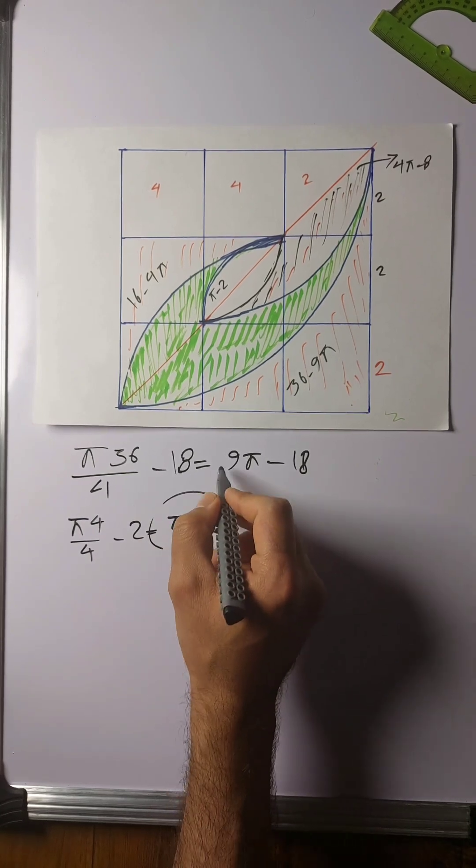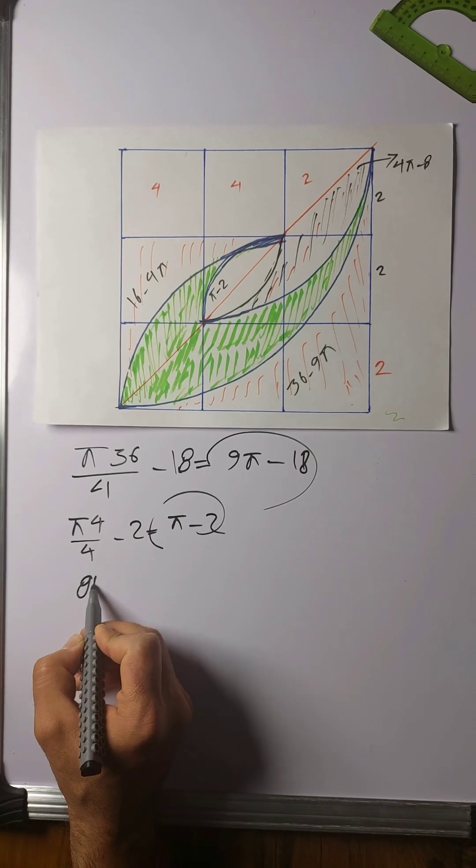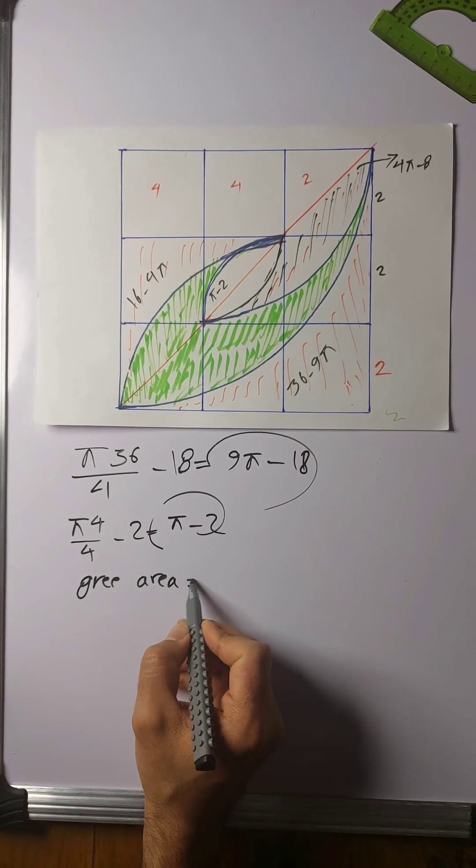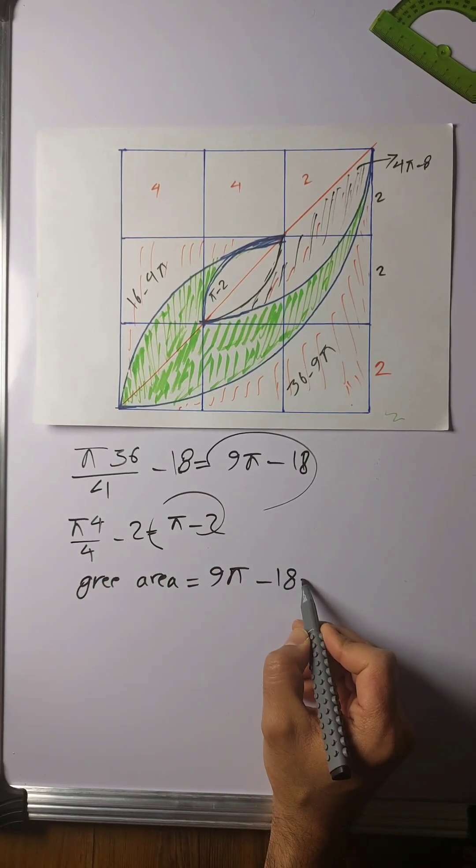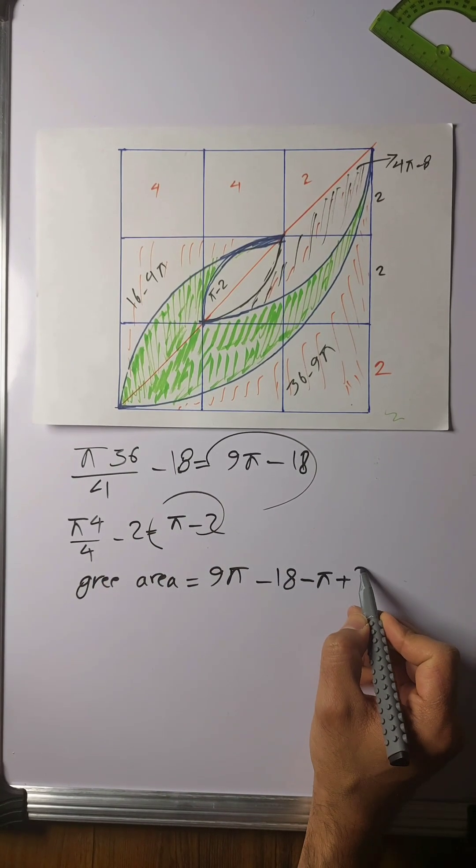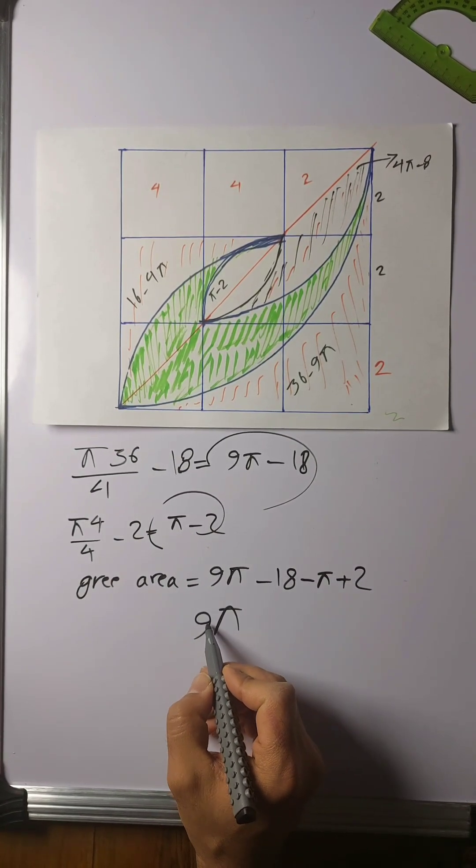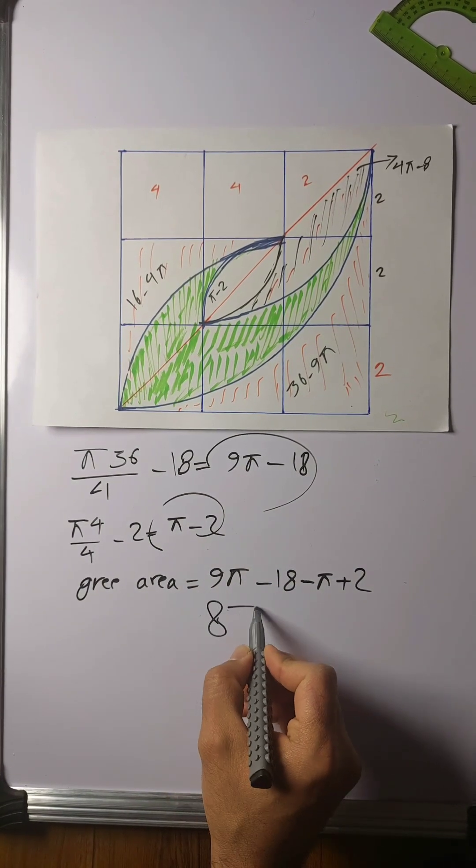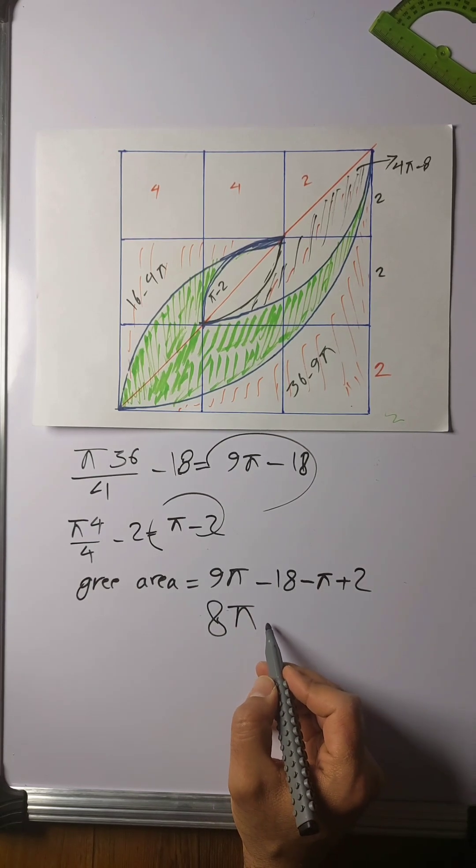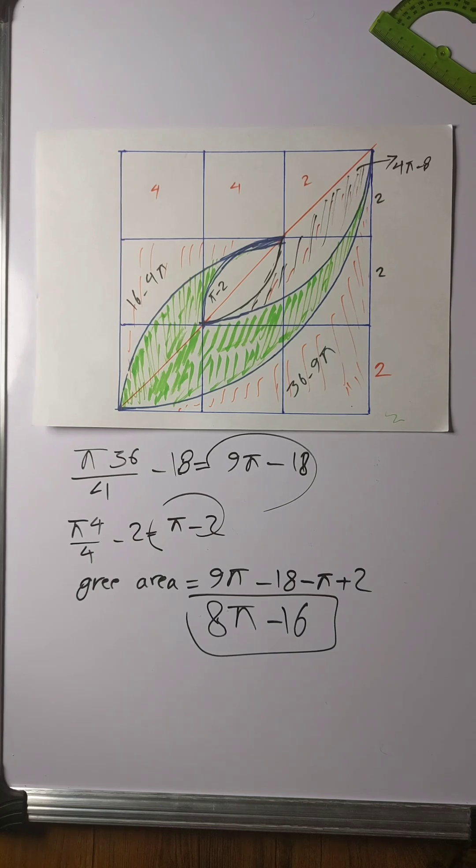If we subtract this one from that one, this green area equals 9π minus 18 minus this, so it becomes minus π plus 2. So the green area is—sorry, 8π minus 16. That was a really fast, intuitive approach that didn't need a lot of calculation or algebra.